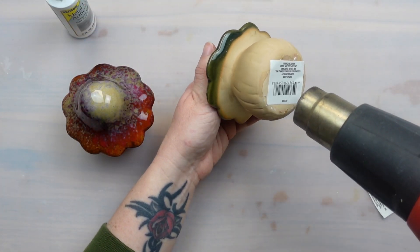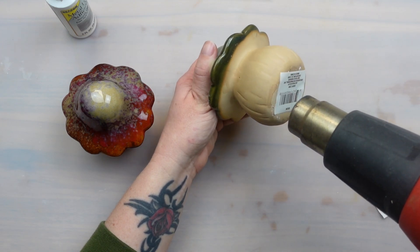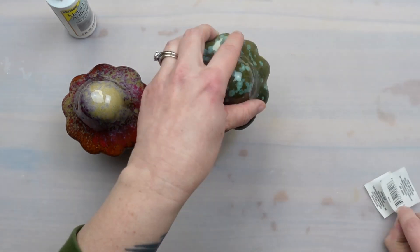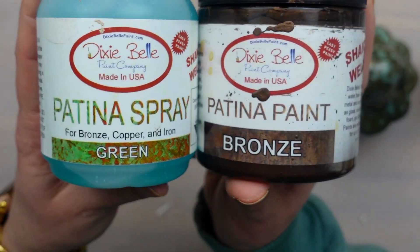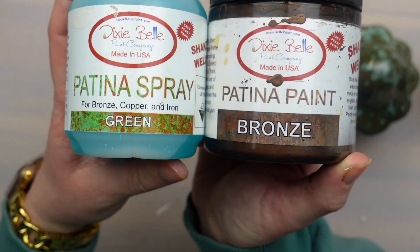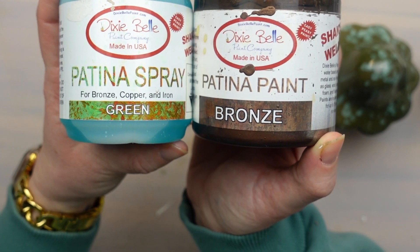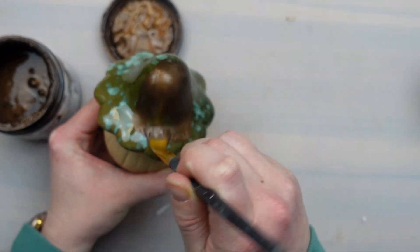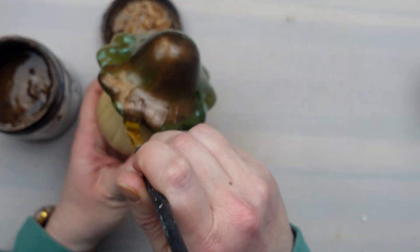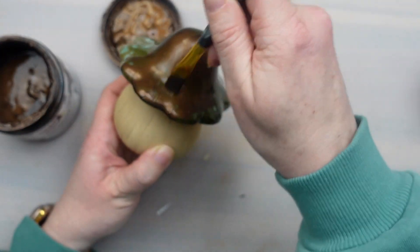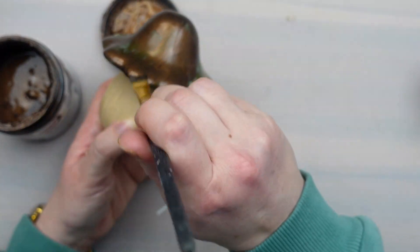Now for the second little dollar tree mushroom this one is super easy. I just wanted to give the top a little patina look. So I painted it with my bronze patina paint by Dixie Belle. I've used this stuff a few times but still not sure how I feel about it. You have to shake the paint really well because there are bits of metal in it. That's what causes the patina reaction once you add the spray. So I painted the mushroom cap with the bronze paint and let that dry.